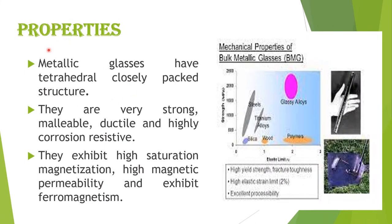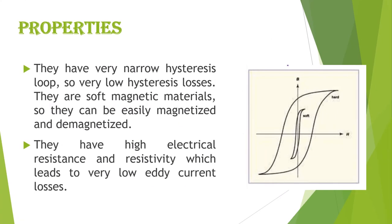Properties of metallic glasses: they have a tetrahedral close-packed structure. They are very strong, malleable, ductile, and highly corrosion resistant. They exhibit high saturation magnetization, high magnetic mobility, and ferromagnetism. They have a very narrow hysteresis loop, resulting in very low hysteresis loss.